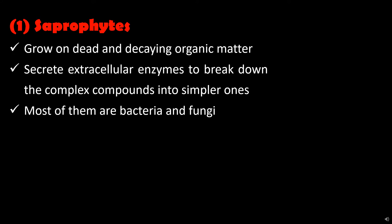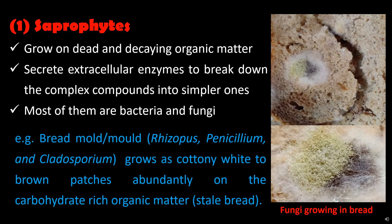Most of them are bacteria and fungi. The spores of bacteria and fungi land on the surface of the organic material, grow there and flourish, and ultimately result in the degradation of organic matter. Most common examples of saprophytes are the bread molds — the cottony white to brown patches seen on stale bread.